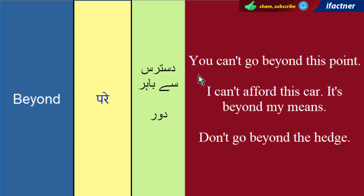Jis tarah kaheen par checkpoint lagi hoi hai aur aap aagay jaane ki koshish kar rahe hain, toh guard kehta hai: 'You can't go beyond this point.' Yaani aap is point se aagay nahin ja saktay, aap is point ke par nahin ja saktay. You can't go beyond this point.